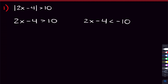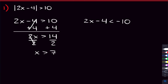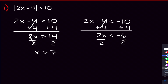Let's solve for x. We can add 4 on both sides for the inequality on the left, giving us 2x is greater than 14. Then we divide by 2 on both sides, giving us x is greater than 7. So one inequality is already solved. For the second inequality, it's the same exact process: we add 4 on both sides, giving us 2x is less than negative 10 plus 4, which is negative 6. Then we divide by 2 on both sides to get x is less than negative 3. Those are our two inequalities solved.